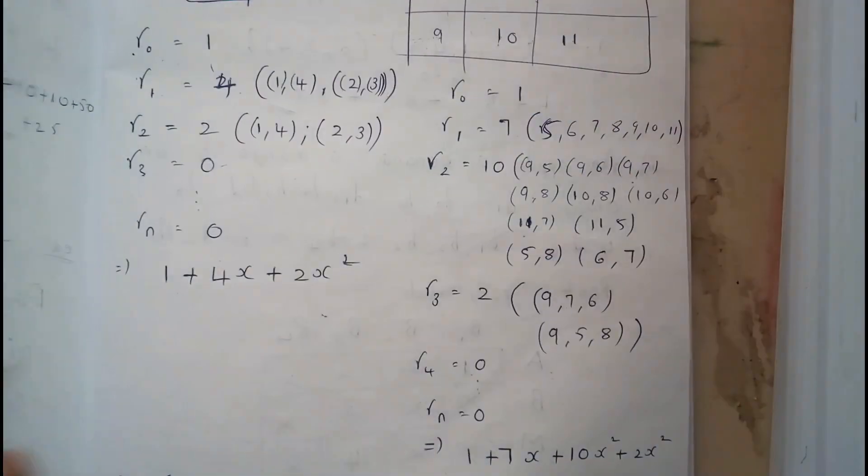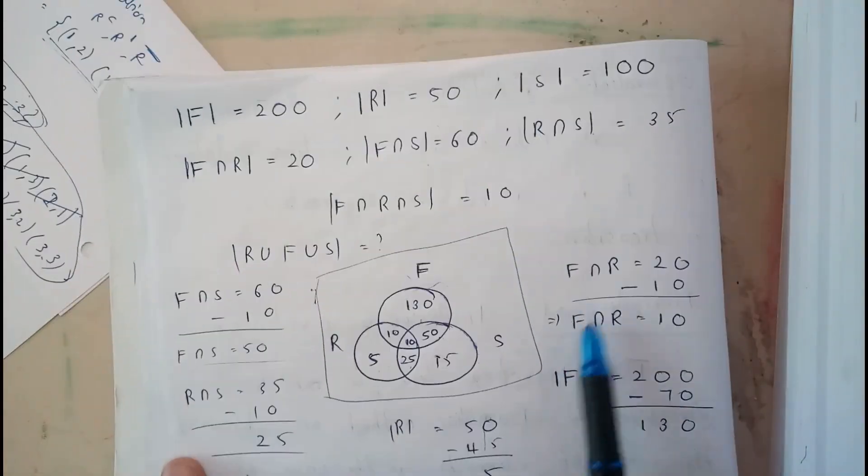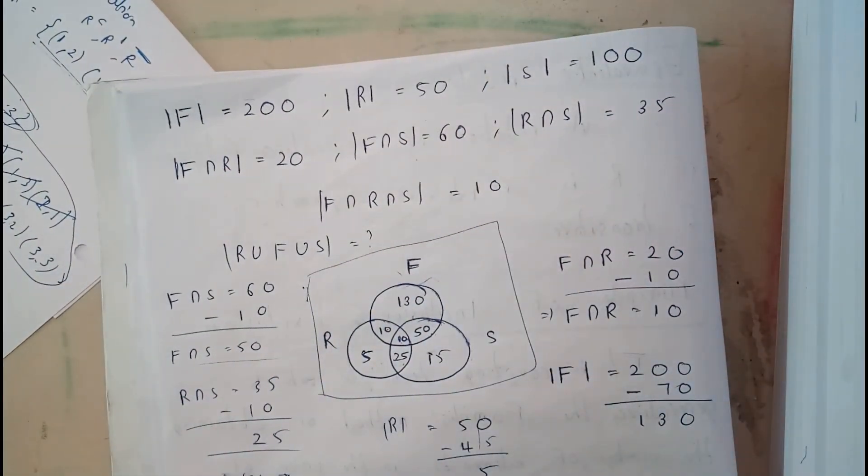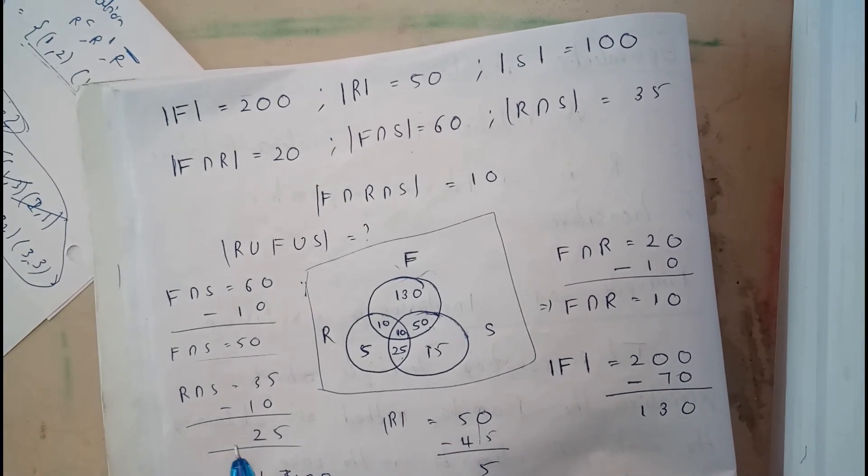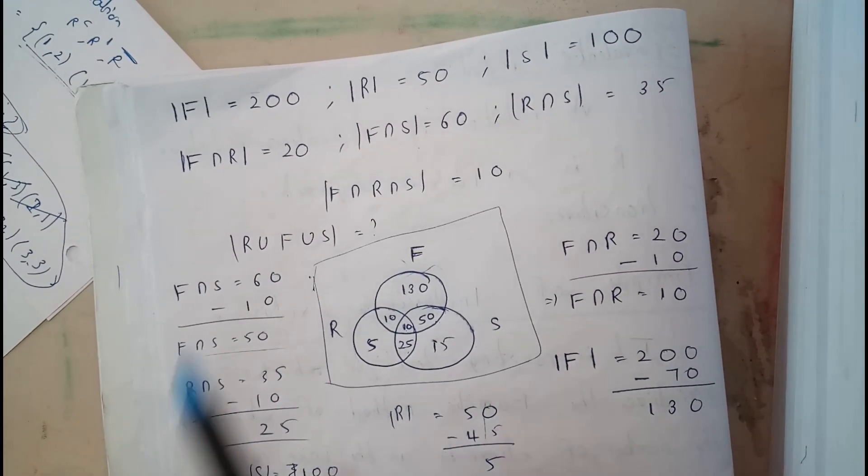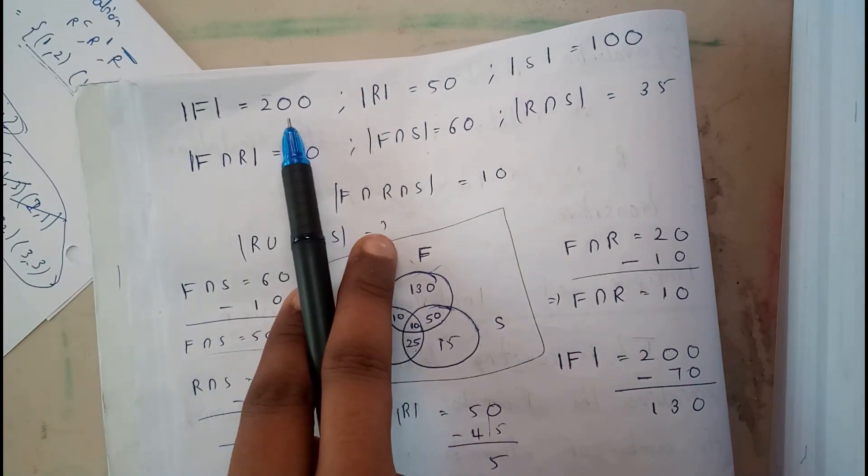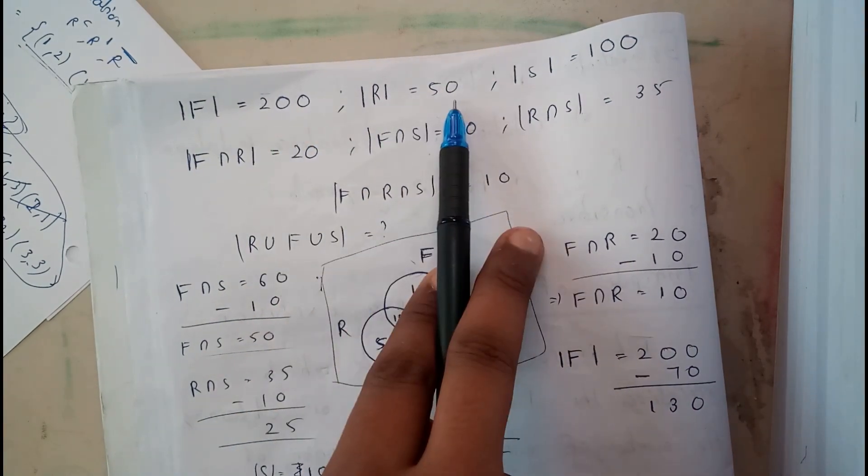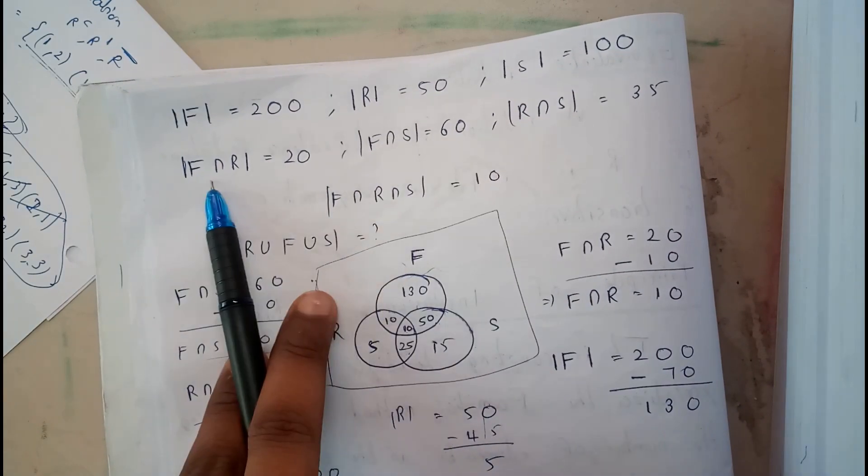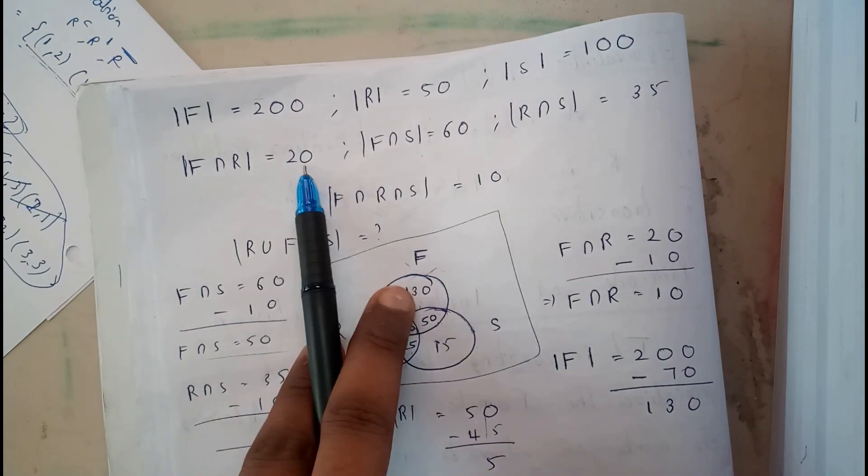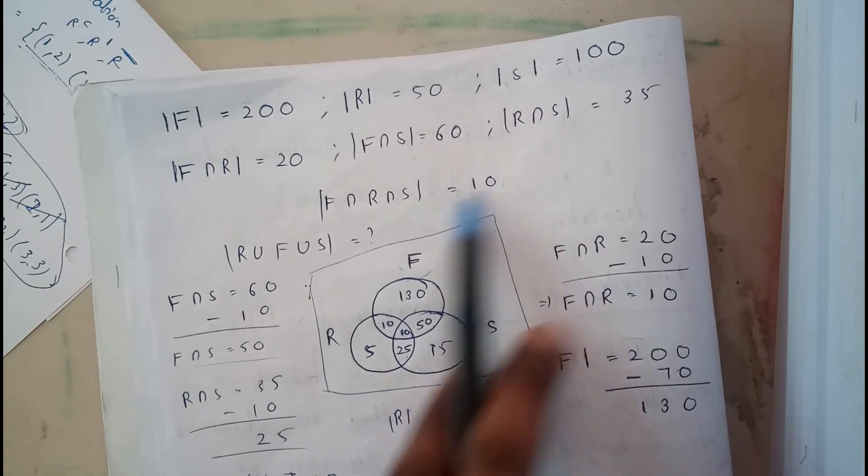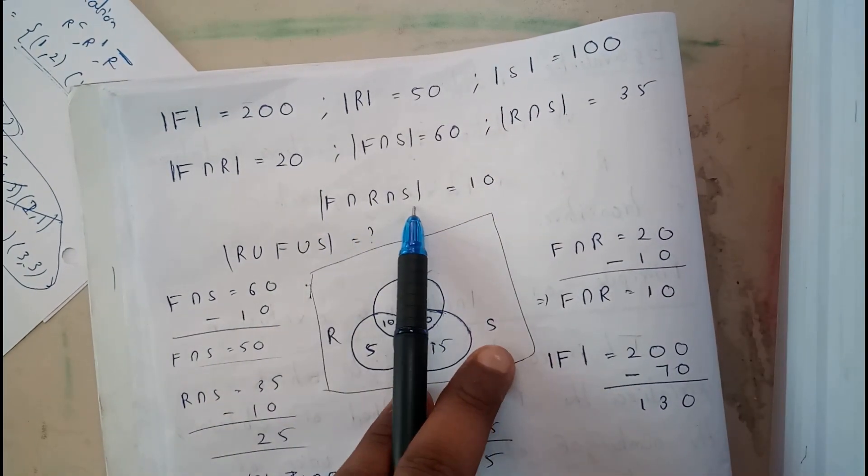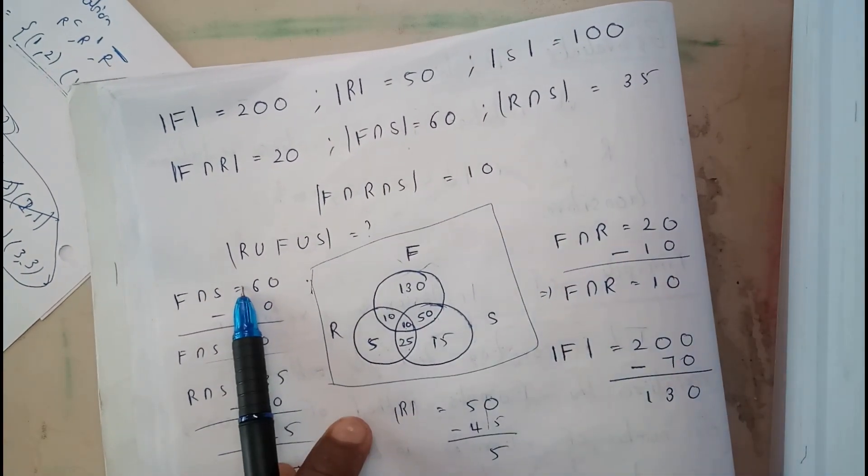Let us take three variables so that it will be clear: F, R, S. The question is F union R union S. F equals 200, R equals 50, S equals 100. F intersection R is 20, F intersection S is 60, R intersection S is 35, F intersection R intersection S is 10. We need to find F union R union S.